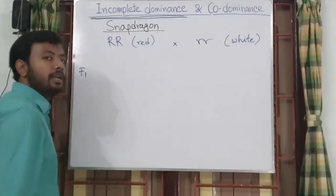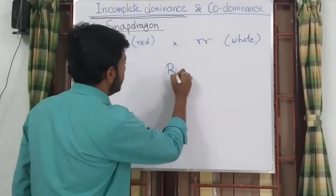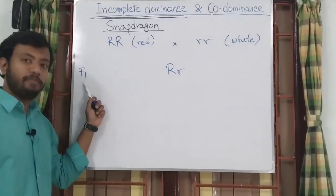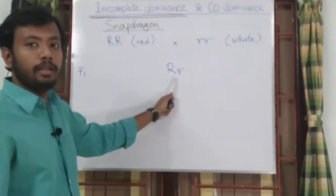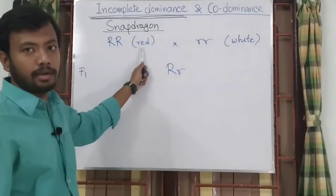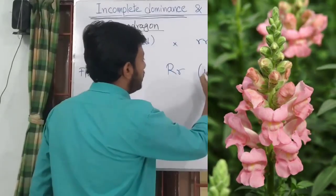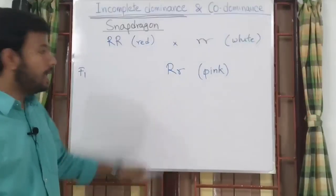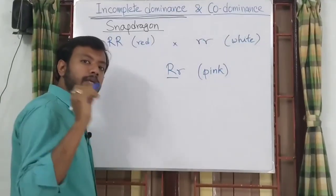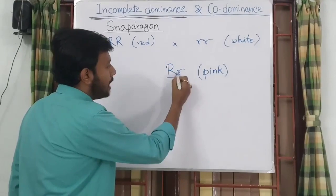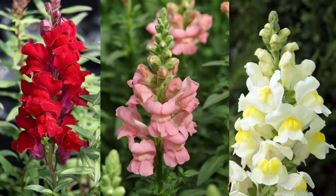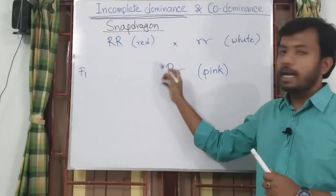If we cross both these homozygous plants and find out the nature of the F1 hybrid, we get a very interesting result. The F1 organism will not be red; instead it will possess a completely different pink color. Here is the exception — the dominant red allele cannot suppress the effect of the recessive white allele completely, so the color appearing in the F1 generation is pink.